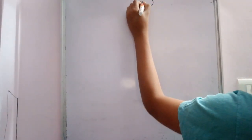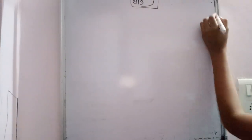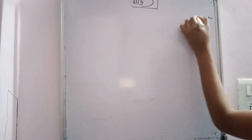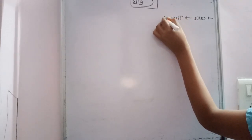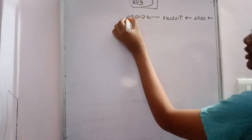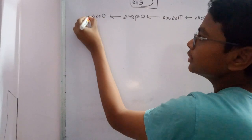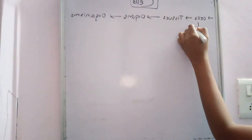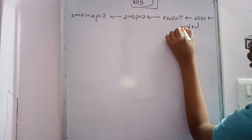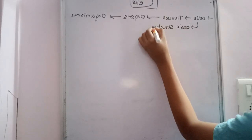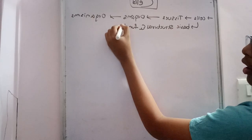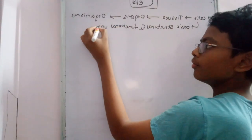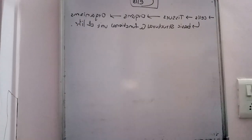Hello guys, welcome back to our channel. In today's video we will see about cells. Cells make tissues, tissues make organs, and organs make organisms. Cells are the basic structural and functional unit of life.